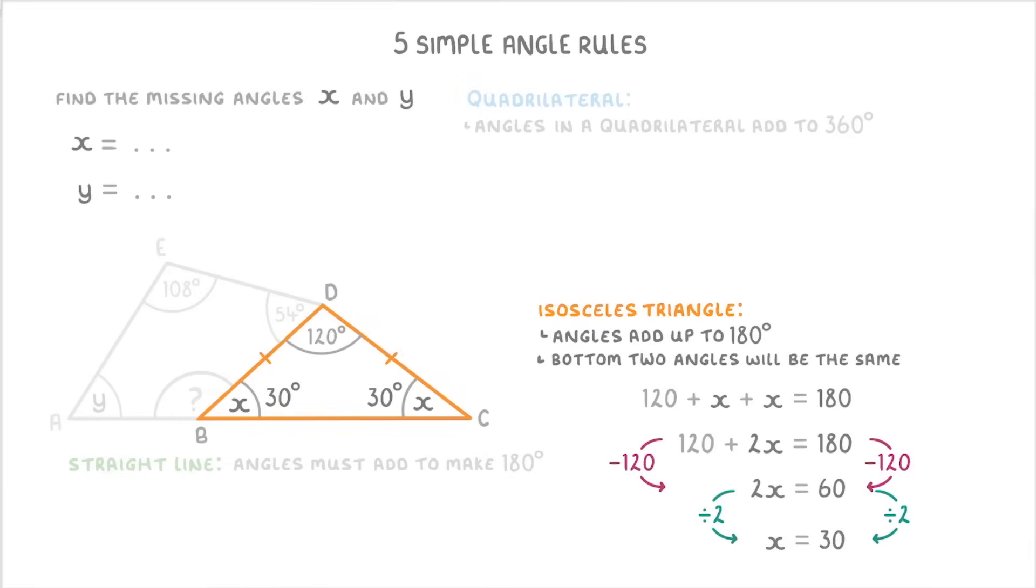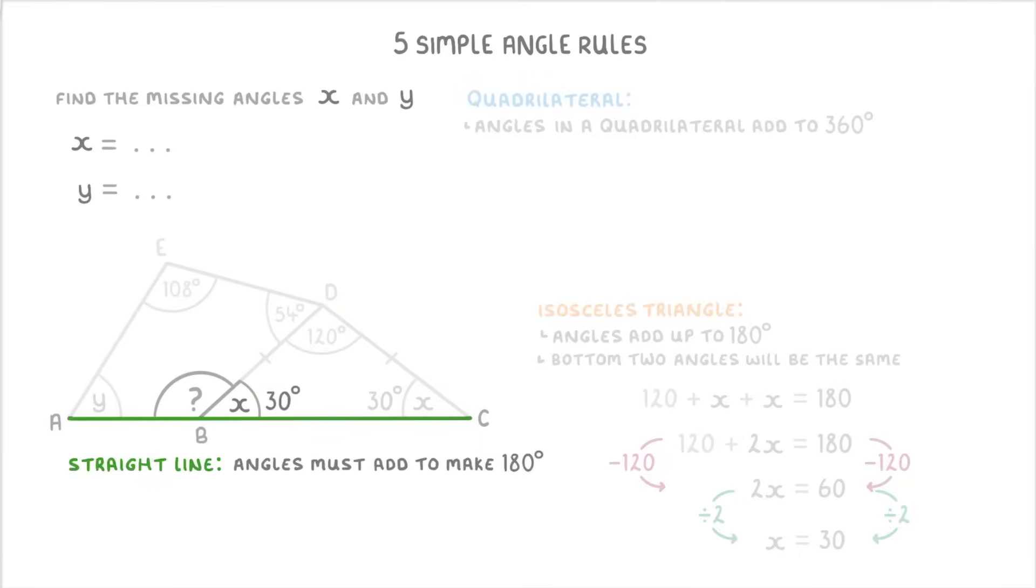Now that we know this, we can move on to our straight line at b, where we know that this unknown angle, plus 30, must equal 180. So we can subtract 30 from both sides to find that the unknown angle must be 150 degrees.